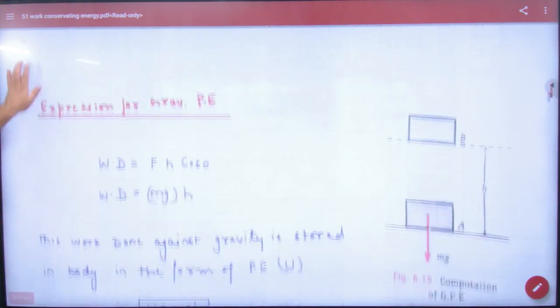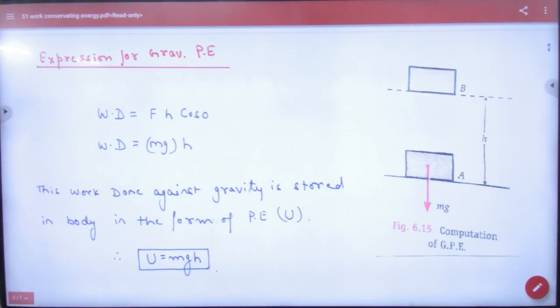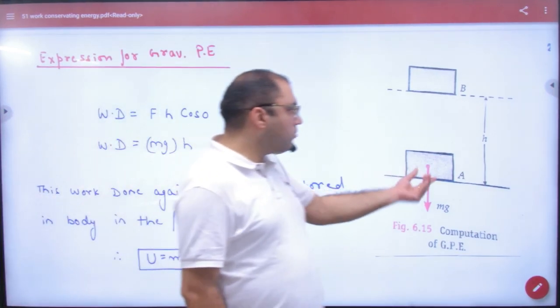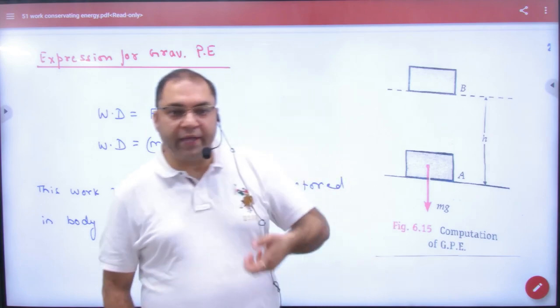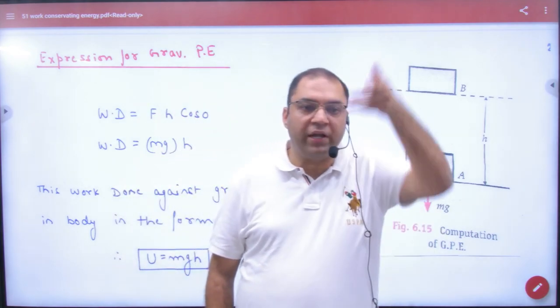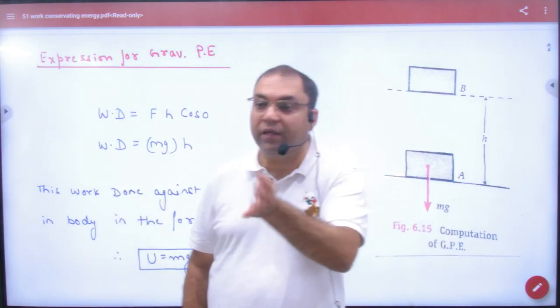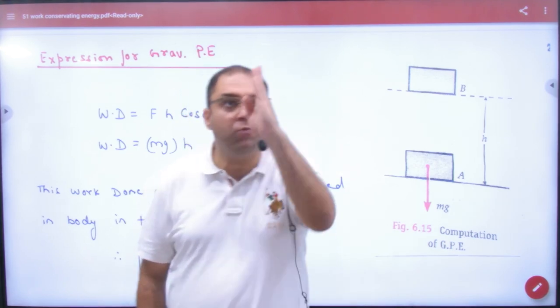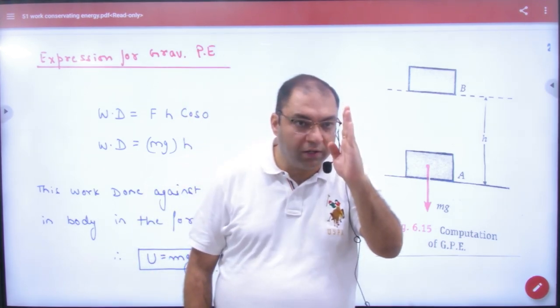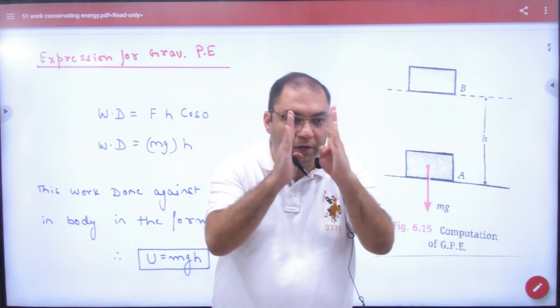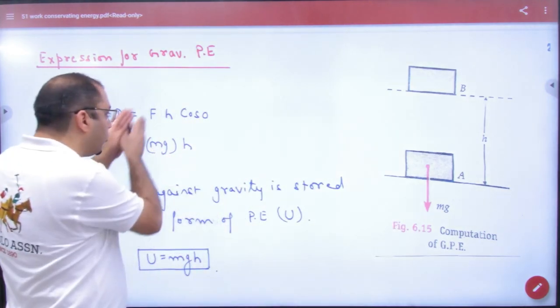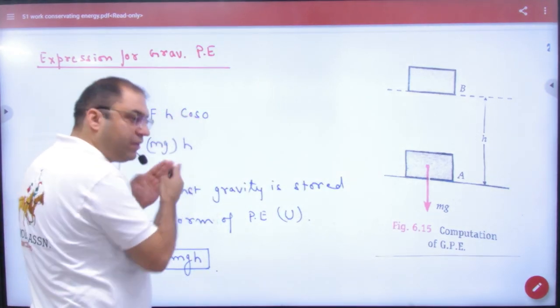Gravitational potential energy: energy because of height above the surface of earth. Expression for gravitational potential energy: If this object is lifted up, how much force is applied on this object? Mg. Where is it applied? Up. Where is the displacement? Up.